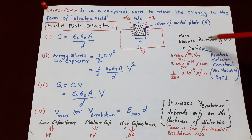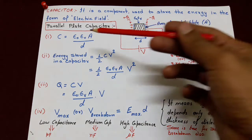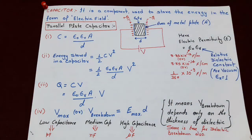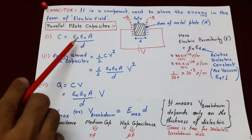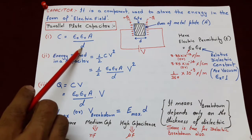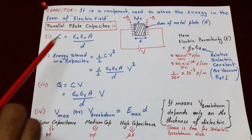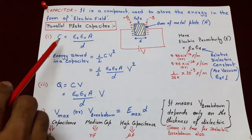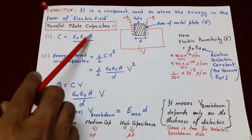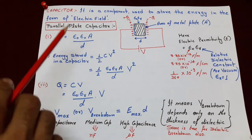Capacitance is directly proportional to relative dielectric constant epsilon-r and area A, and inversely proportional to separation between the plates, small d. Therefore, we can change the capacitance by changing any of these three parameters.